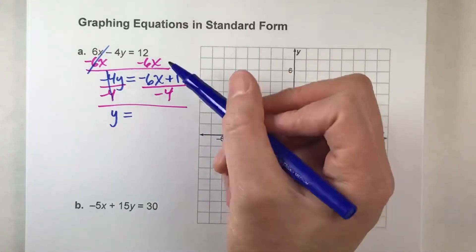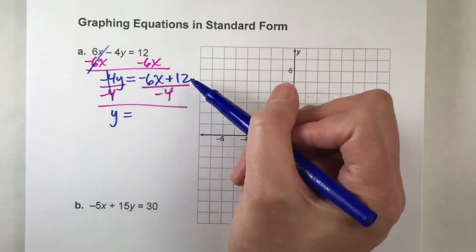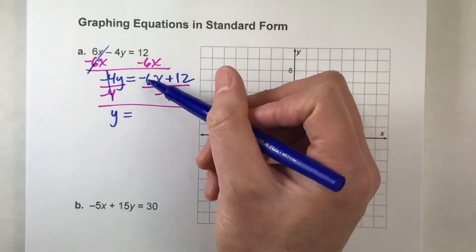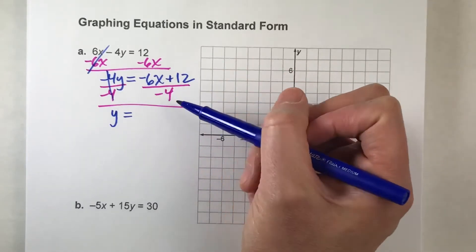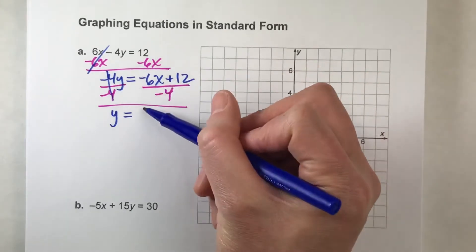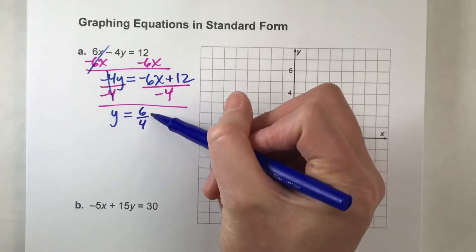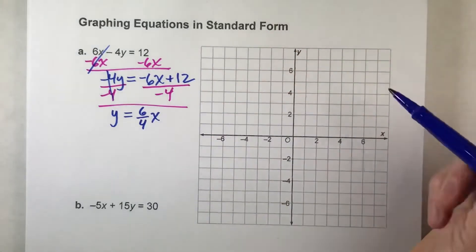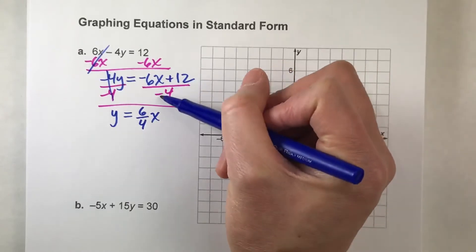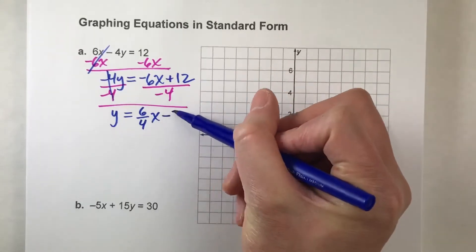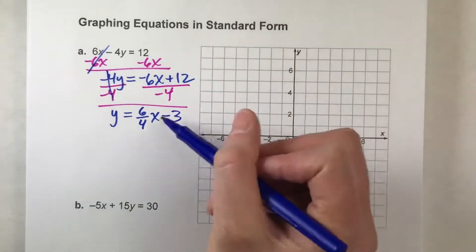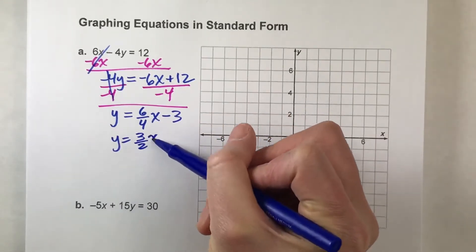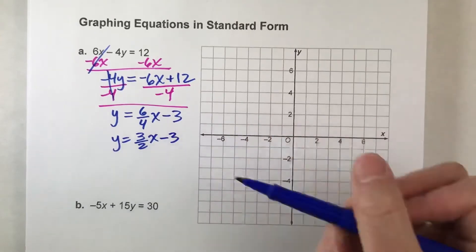Here's where things get tricky — we're going to have to divide each of these by negative 4. Negative 6 divided by negative 4 is positive, and 6 divided by 4 is going to give a decimal, so I'll keep it as a fraction: 6 over 4 x. And positive 12 divided by negative 4 is negative 3. Now I've got y by itself, and I should reduce my fraction — 6 fourths reduces to 3 halves.